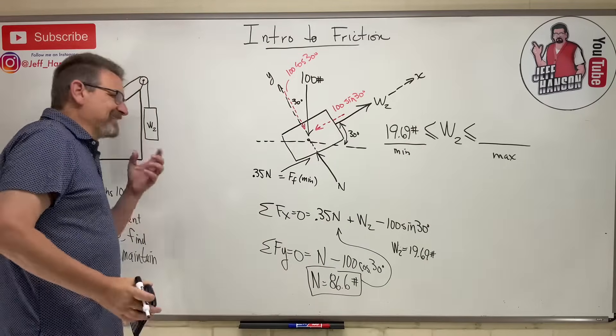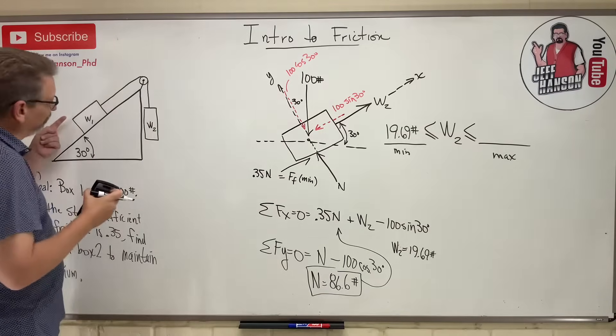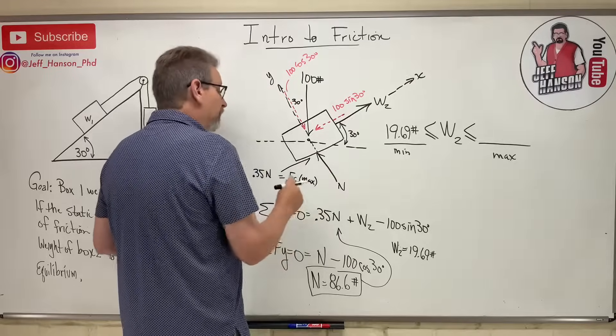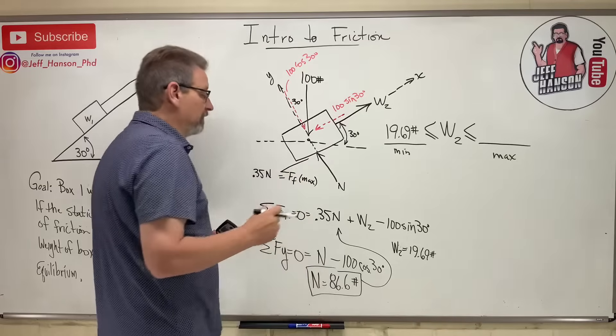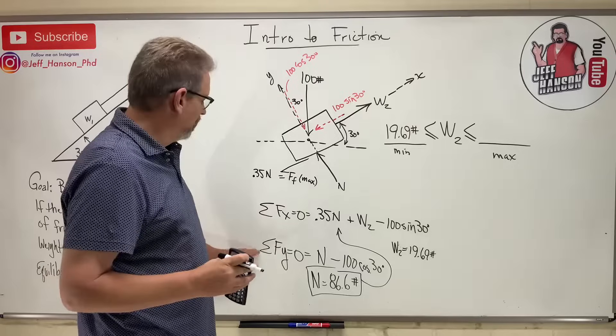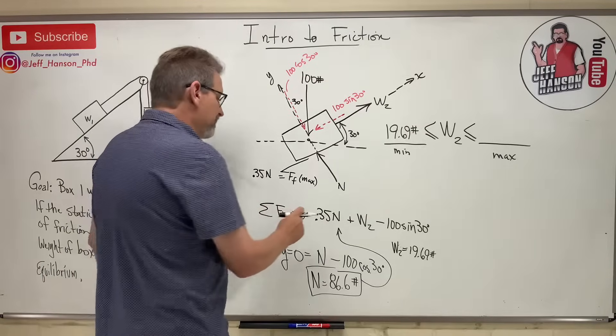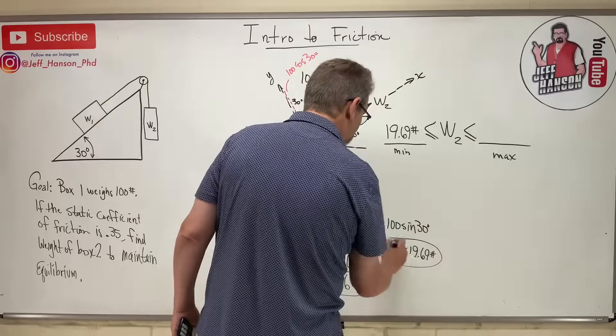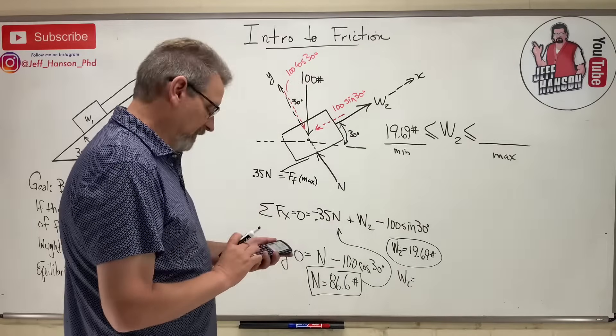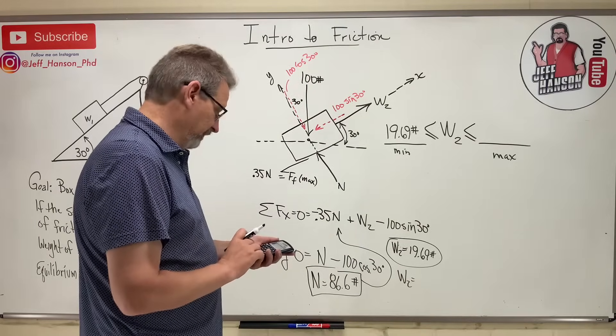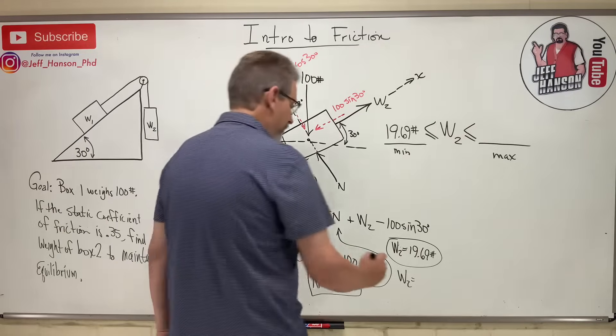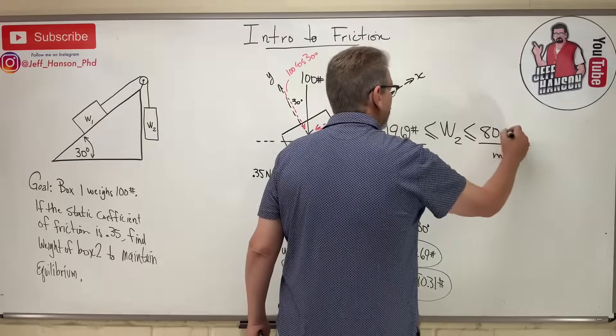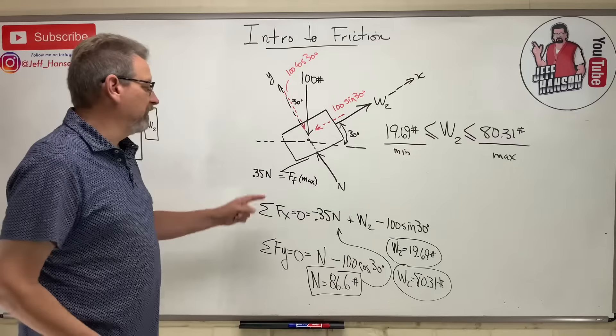So now let's talk about the max condition. For the max condition, now W2 is very heavy. And this box wants to slide up the hill. So what's going to change on this free body? If the box slides up the hill, we're looking at max now. Well, if it goes up the hill, then the friction is going to oppose that and it would go down the hill. So let's see, would our y equation change at all? No. Would our x equation change at all? Well, the only thing that changes, this guy went from being a positive to now being a negative, didn't he? So now we can resolve. This was min. Here comes W2 for max, it's going to be what? 50 plus 0.35 times 86.6, 80.31. And so that gives us our max condition.